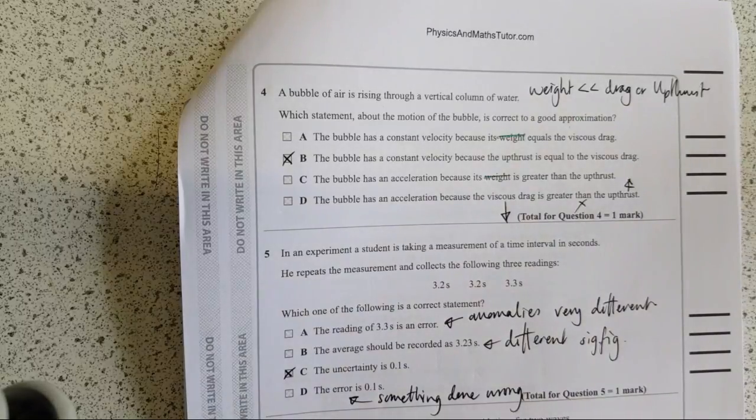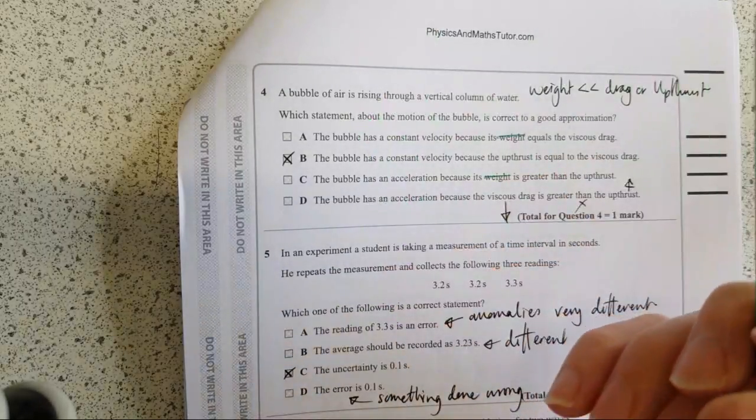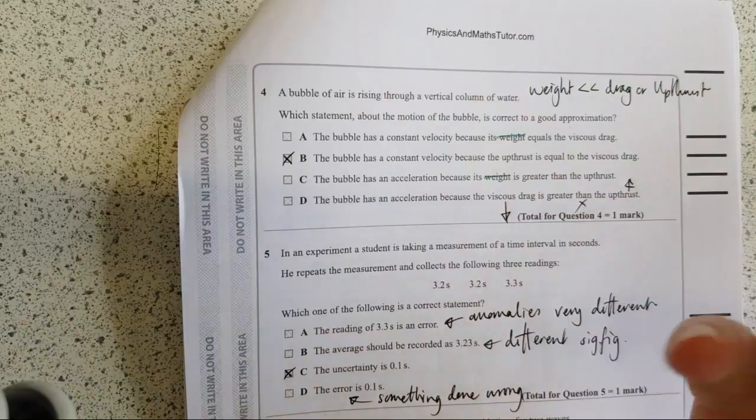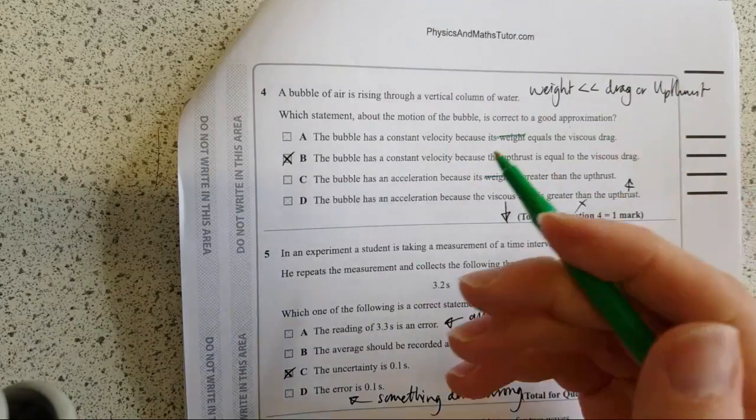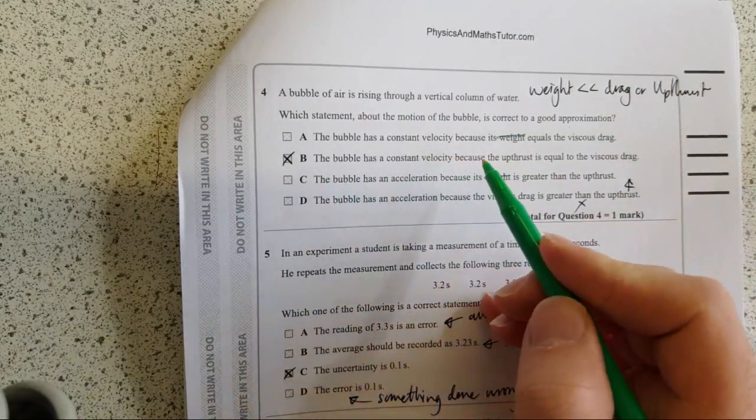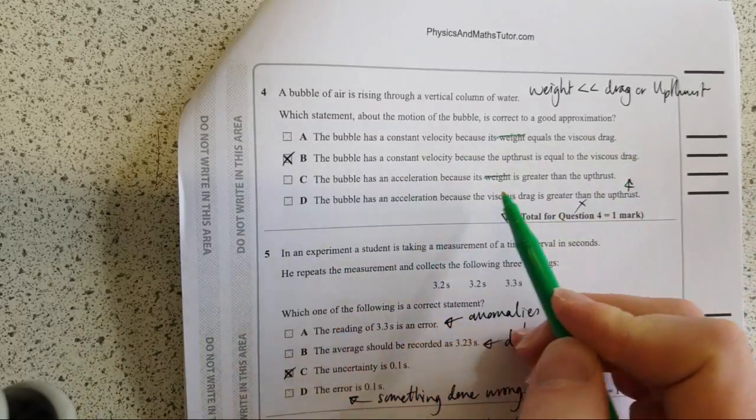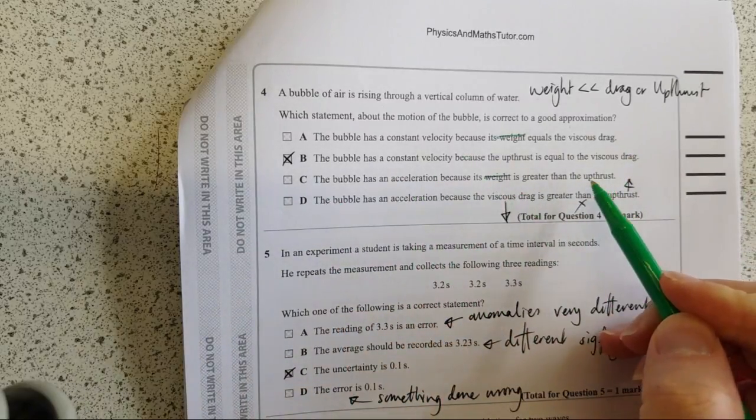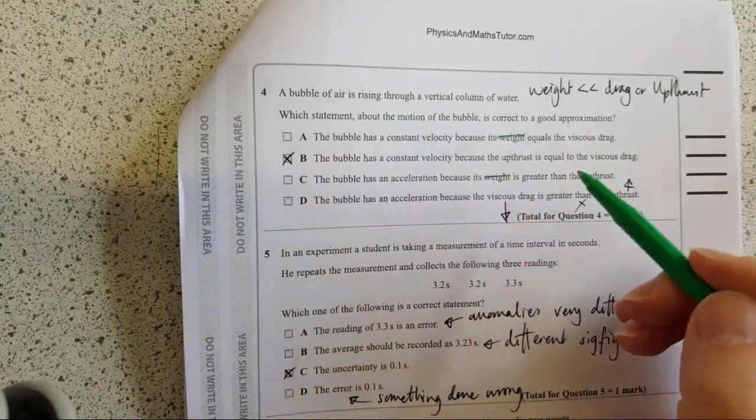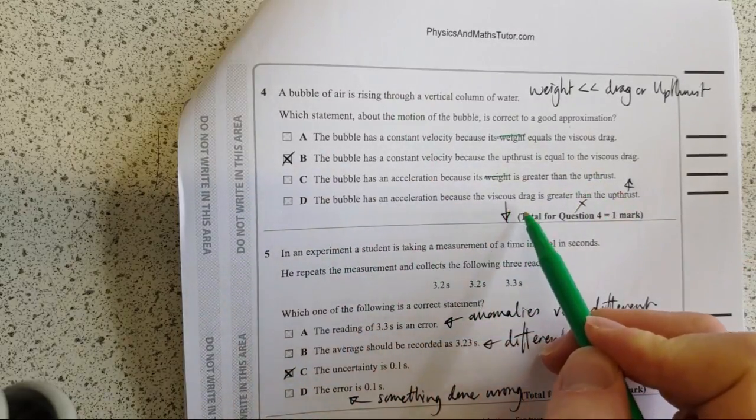So the thing you need to solve this one is to understand that weight is a lot less than drag or the up thrust for a bubble of air. Air is a very small density, so very small weight. So the only one that makes any sense is the bubble has a constant velocity because the up thrust is equal to the viscous drag. It can't be an acceleration because weight is greater than the up thrust, can it? That would mean an acceleration downwards, it's rising.